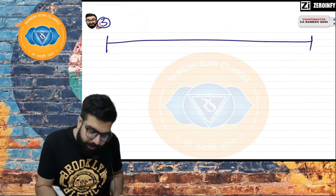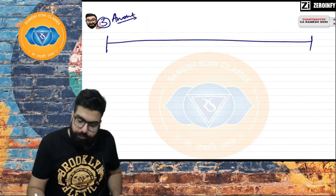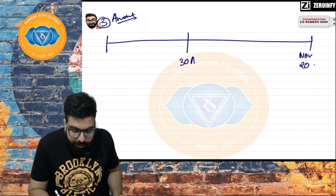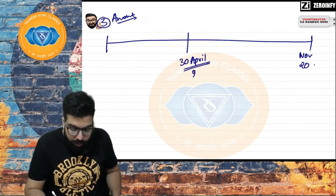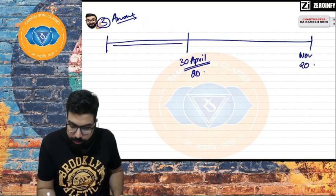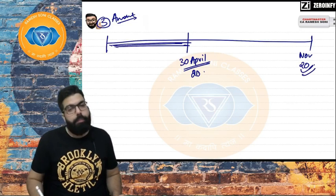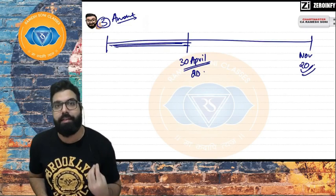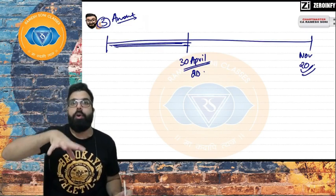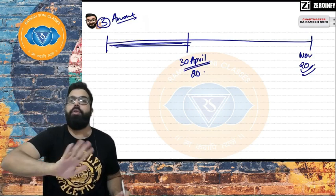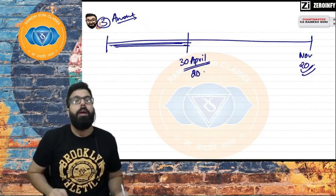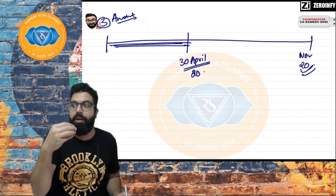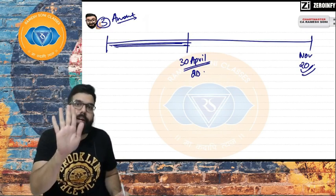Regarding amendments for the November 2020 exam: amendments up to 30th April 2020 are applicable and have been incorporated in your book. You don't need to read amendments separately. Even if ICAI releases a statute update, it's already incorporated in the book, chart book, and Q&A material.